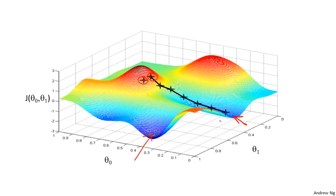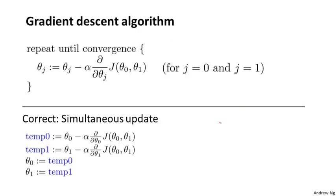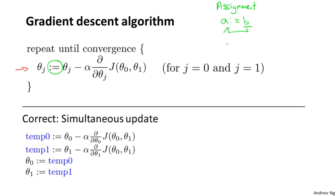So that's the intuition in pictures. Let's look at the math. This is the definition of the gradient descent algorithm. We're going to repeatedly do this until convergence: we're going to update my parameter theta_j by taking theta_j and subtracting from it alpha times this derivative term. First, this notation here — colon equals — I'm going to use colon equals to denote assignment, the assignment operator. So concretely, if I write a colon equals b, this means take the value in b and use it to overwrite whatever the value of a is.